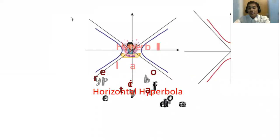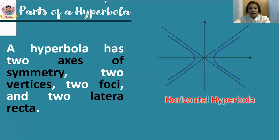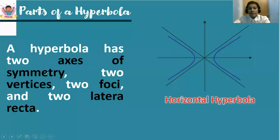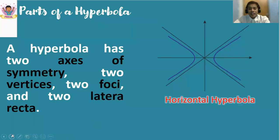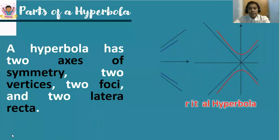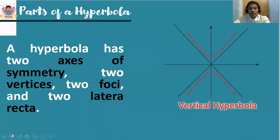Here are the important parts of a hyperbola. Notice that a hyperbola, the same as an ellipse, has two axes of symmetry, two vertices, two foci, and two latera recta. This is how it looks for a horizontal hyperbola, and this is how it looks for a vertical hyperbola.